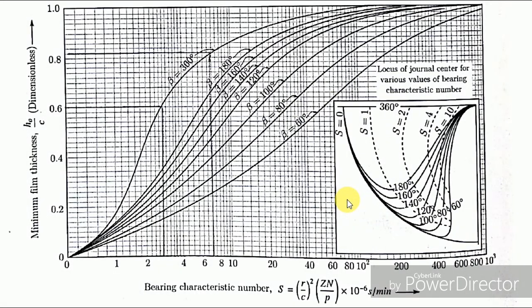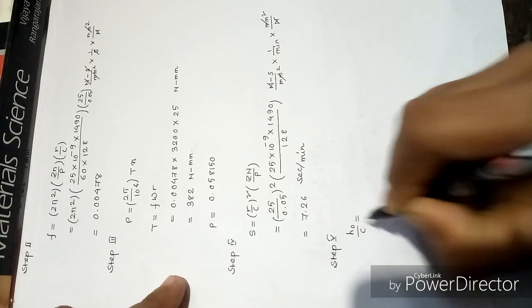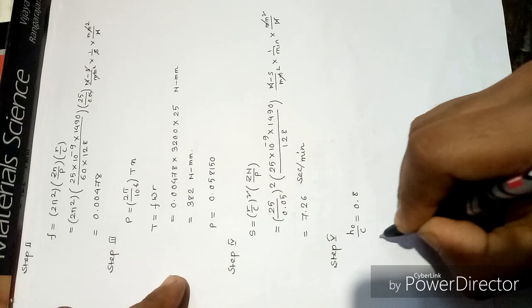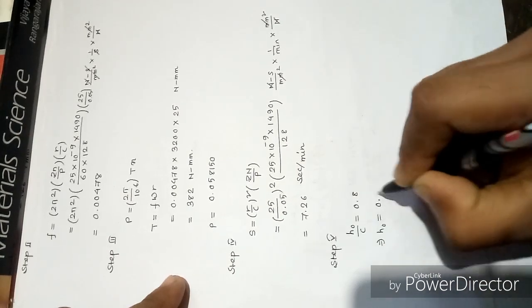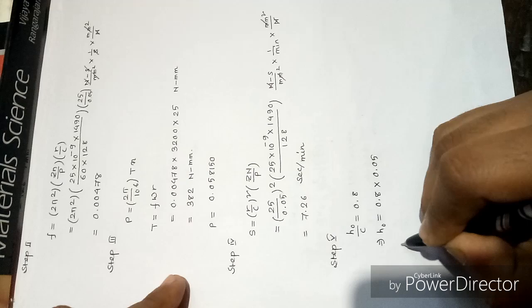To determine the minimum film thickness, we have to use this curve from the design data handbook. Here we have Sommerfeld number 7.26. We have H_0 by C, the minimum film thickness variable. The value is approximately 0.8. From this curve, H_0 by C equals 0.8. H_0 equals 0.8 into C. C is 0.05, so H_0 equals 0.04.